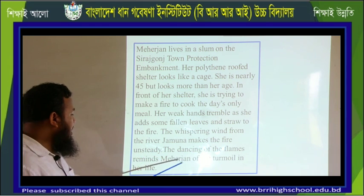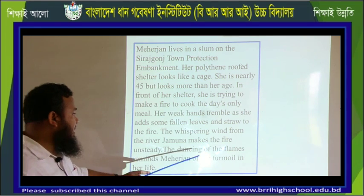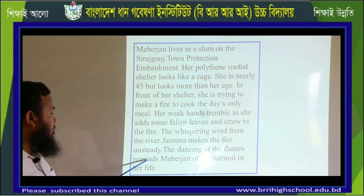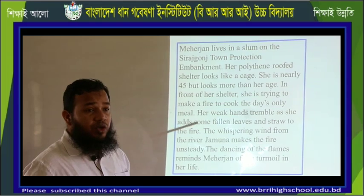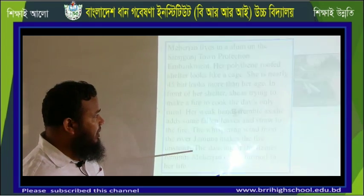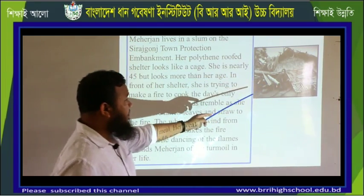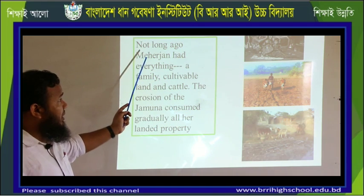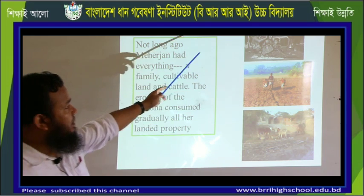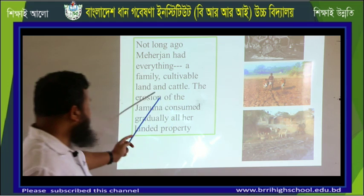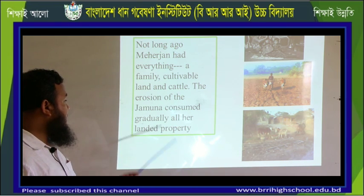The dancing of the flames reminds Meherjan of the turmoil of her life. Not long ago, Meherjan had everything: a family, cultivable land, and cattle. But unfortunately, the erosion of the river Jamuna consumed gradually all her landed property. We can see in the picture that Meherjan had a family and land, but she has become very poor.